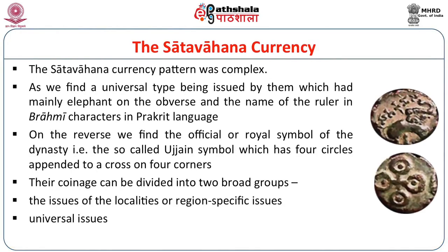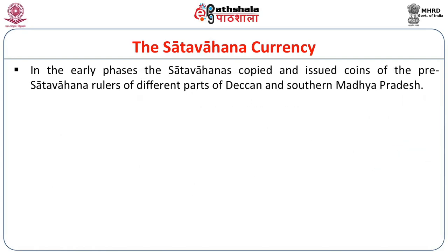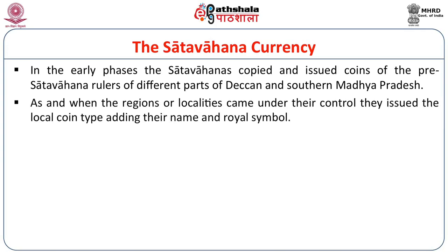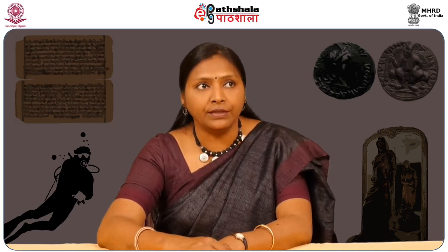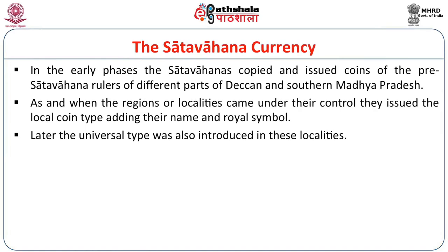The coinage of the Satavahanas can be broadly divided into two groups: locality or region-specific coinage, and the imperial or universal issues. In the early phases, the Satavahanas copied and issued coins of the pre-Satavahana rulers of different parts of Deccan and South Madhya Pradesh. As and when regions came under their control, they issued the local coin type adding their name and the royal symbol, and gradually the universal type was introduced. So to maintain continuity, the Satavahanas imitated the local coin type before introducing their own.